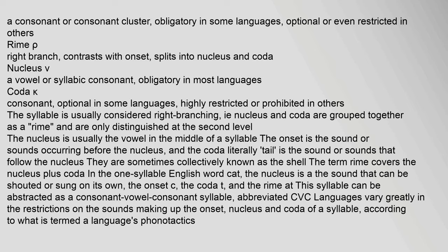The syllable is usually considered right-branching, i.e. nucleus and coda are grouped together as a rhyme and are only distinguished at the second level. The nucleus is usually the vowel in the middle of a syllable. The onset is the sound or sounds occurring before the nucleus, and the coda (literally 'tail') is the sound or sounds that follow the nucleus — sometimes collectively known as the shell. Languages vary greatly in the restrictions on sounds making up the onset, nucleus, and coda, according to a language's phonotactics.